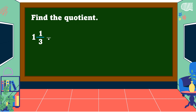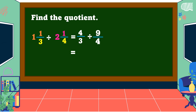Find the quotient of 1 and 1 third and 2 and 1 fourth. First, change the mixed fractions into improper fractions. For 1 and 1 third: 1 times 3 is equal to 3, plus 1 is equal to 4, over 3. For 2 and 1 fourth: 2 times 4 is equal to 8, plus 1 is equal to 9, over 4. Next, get the reciprocal of the divisor. We copy 4 thirds, then get the reciprocal of 9 over 4, which is 4 over 9, and proceed to multiplication. 4 times 4 is equal to 16, and 3 times 9 is equal to 27. There is no common factor between 16 and 27, so 16 over 27 is in the lowest term.